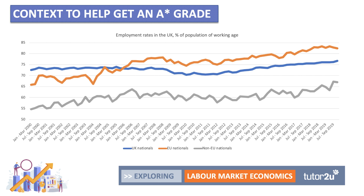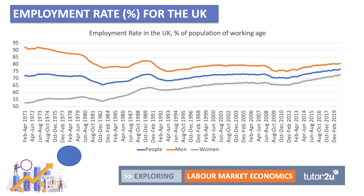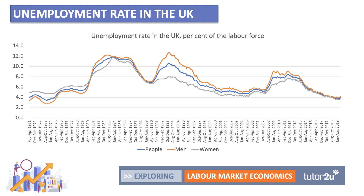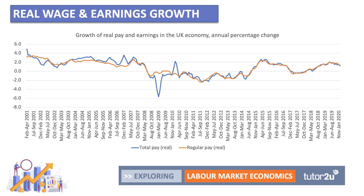The orange line shows the employment rate among EU nationals coming to the UK — the vast majority come to work and that figure is rising. The overall employment rate has also been rising, with a fall during the 2008 recession. Employment has been rising strongly for women and the unemployment rate has been falling. Over the last 10 years we've had substantial net inward migration and yet the unemployment rate has fallen from 10% to around 4%, which is substantial evidence that migrant flows don't necessarily lead to higher unemployment.